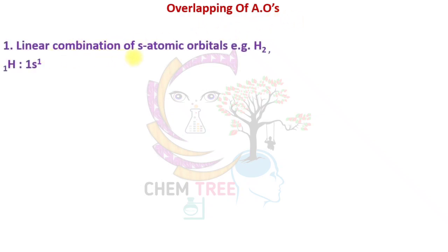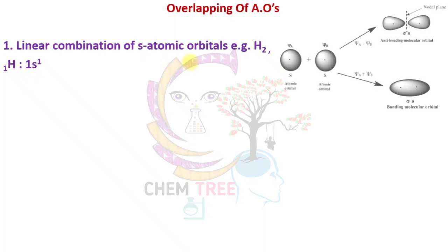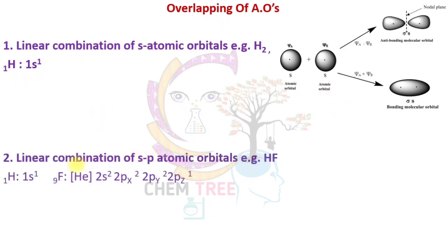The first type of overlapping is the linear combination of s atomic orbitals — hydrogen molecule is an example. The formation of bonding and anti-bonding molecular orbitals through s-s overlapping has already been discussed. The second type is the linear combination of sp atomic orbitals.